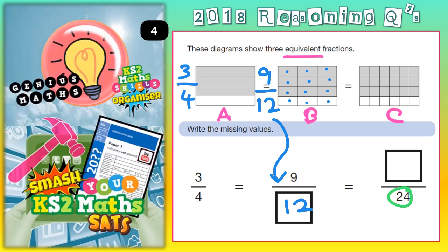So we just need to count the shaded bits now. So that's 1, 2, 3, 4, 5, 6, 7, 8, 9, 10, 11, 12, 13, 14, 15, 16, 17, 18. So that's 18 out of 24.